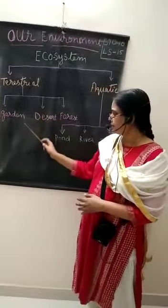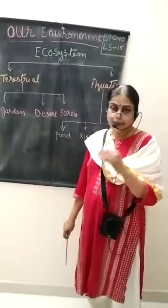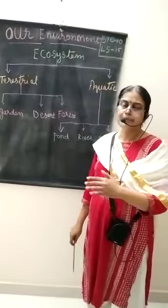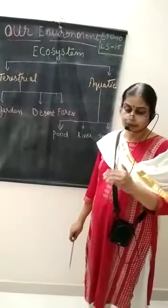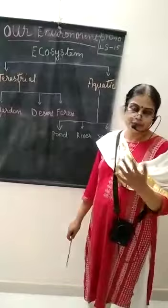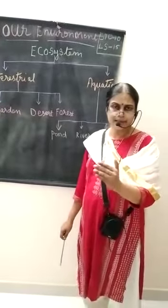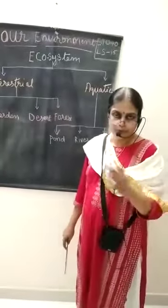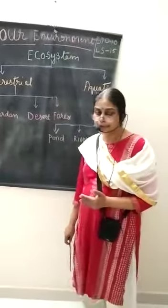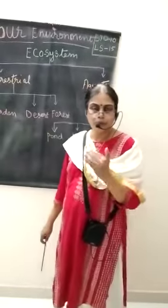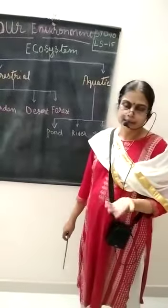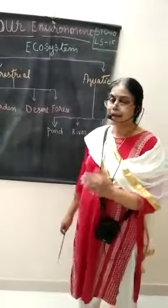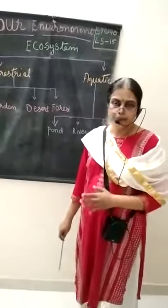Now let's discuss the terrestrial ecosystem. If you take a garden, you can see many plants growing. For plants to grow, they need sunlight, water, and other physical conditions. Plants are called producers because they can prepare their own food with the help of sunlight and chlorophyll through the process of photosynthesis.